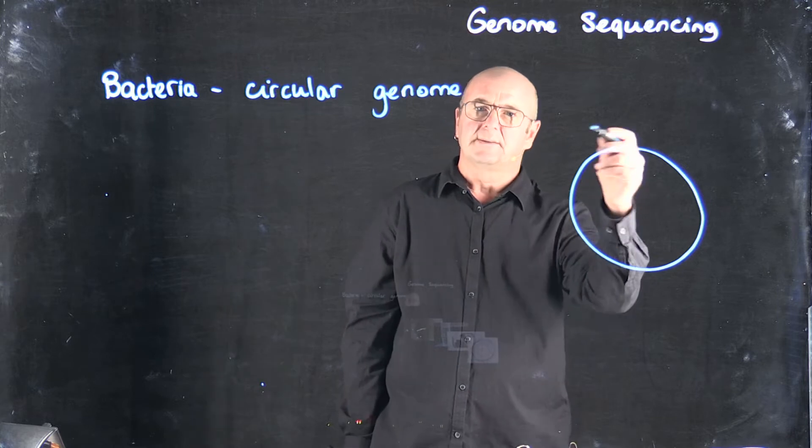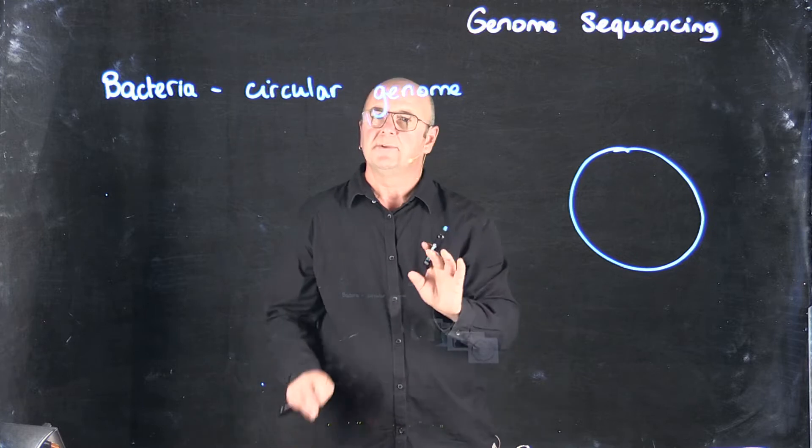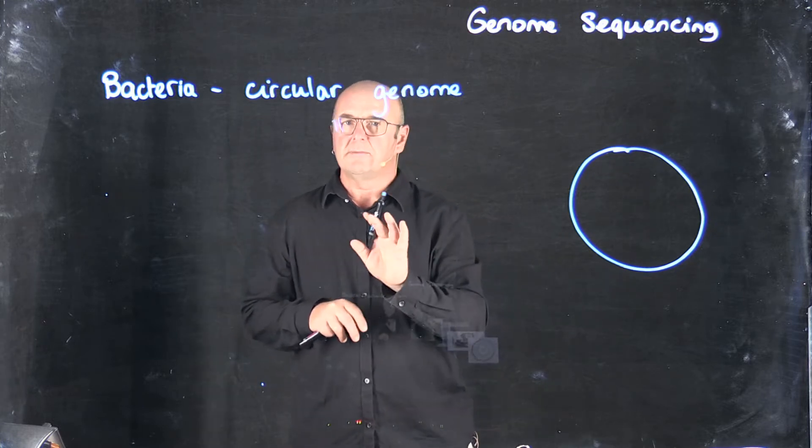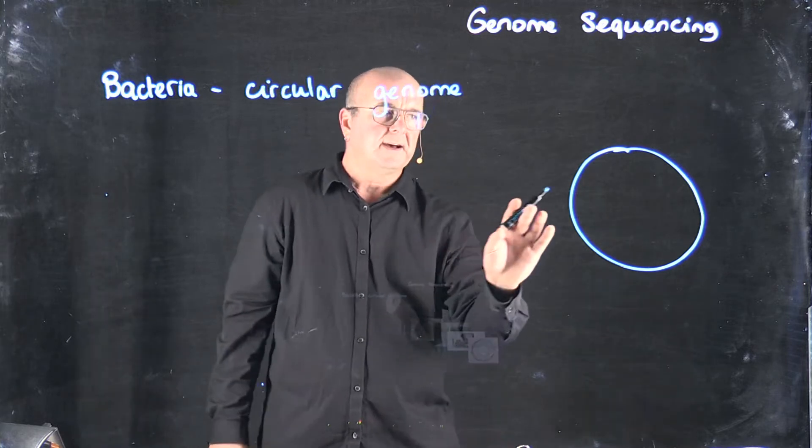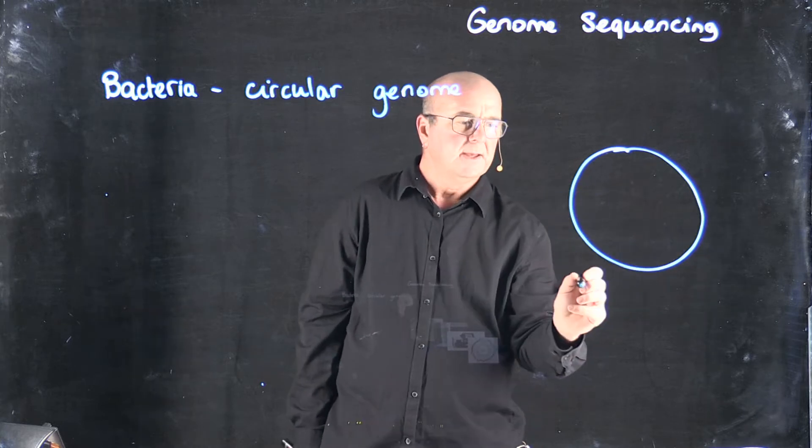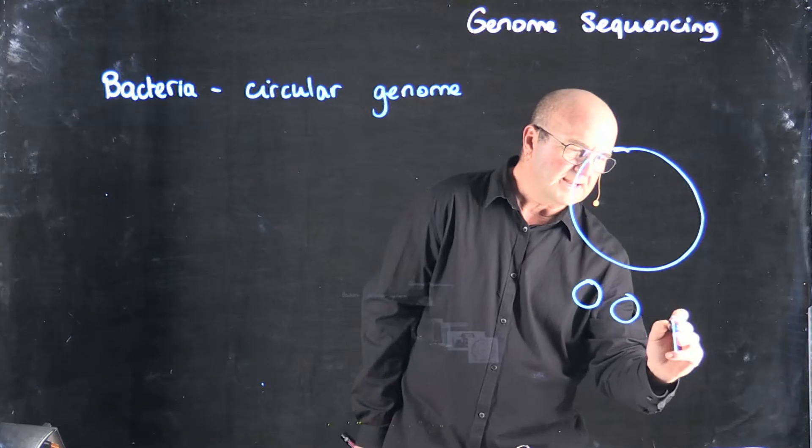Of course, the bacteria has a way of knowing where the beginning and end is so that it can make a copy of the genome. But for our purposes, it's a complete circle. Most bacteria have a single circle for the genome, which is a large circle, and maybe a few smaller circles that we call plasmids.